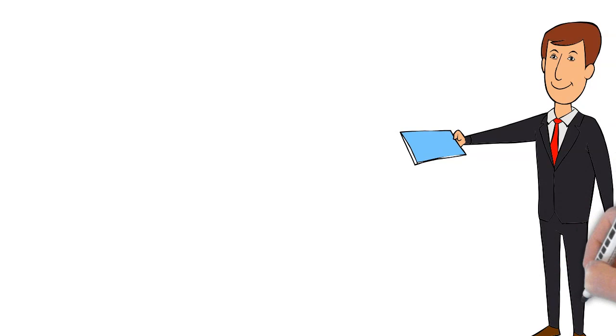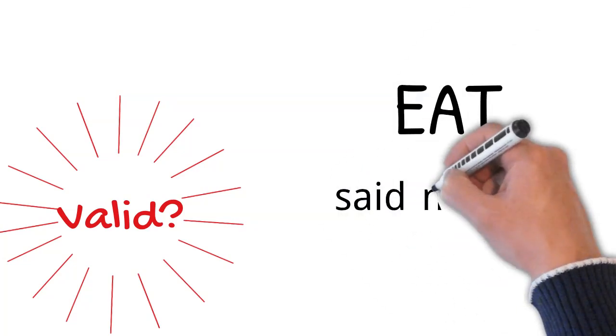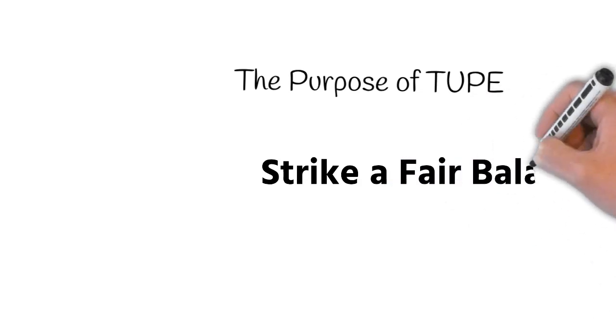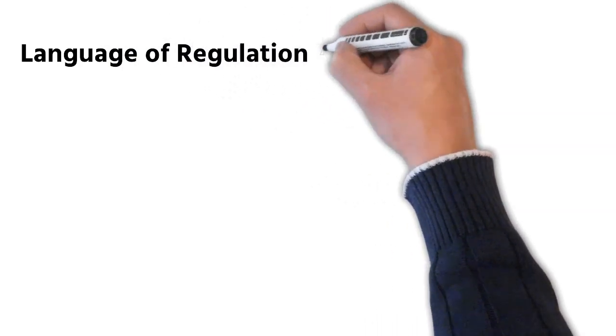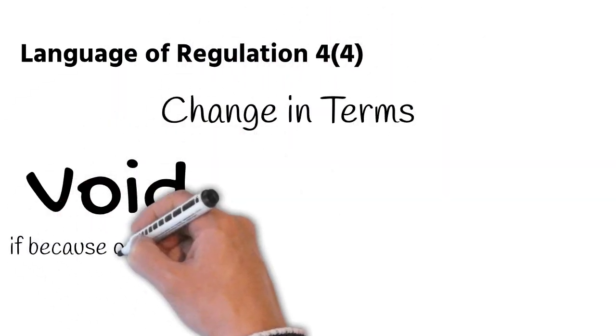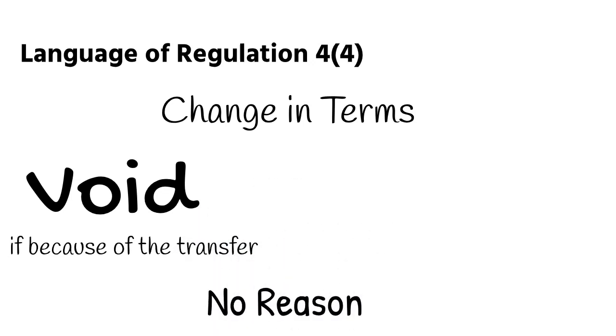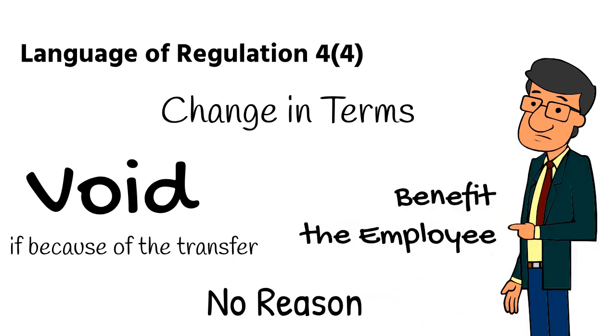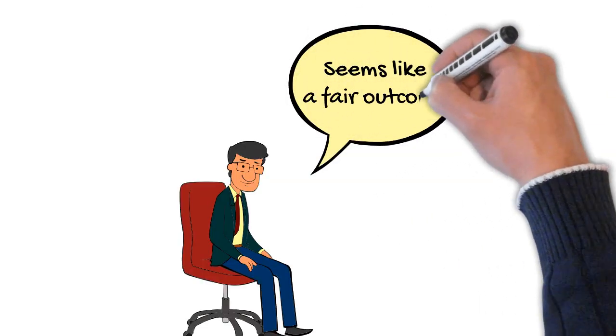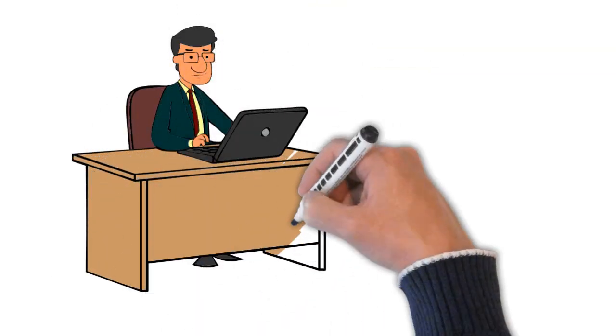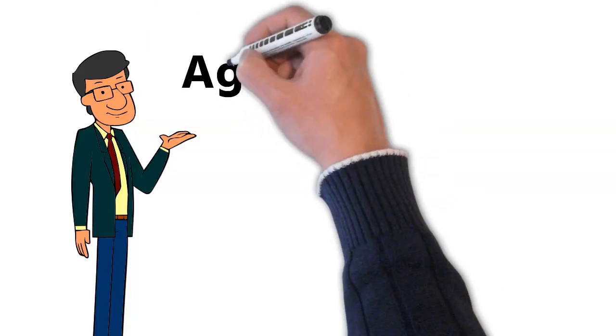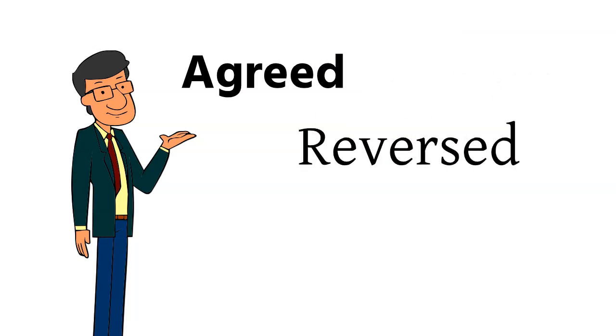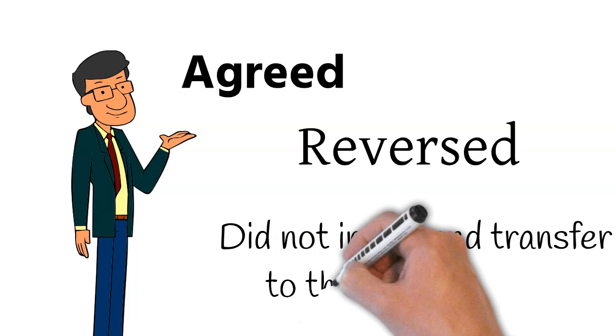One of the issues that subsequently reached the Employment Appeal Tribunal was whether these contractual improvements were valid and the EAT held they weren't. The EAT said the purpose of TUPE was to strike a fair balance between the rights of employer and employee. The language of Regulation 4.4 made it clear that any change in terms would be void if they were because of the transfer and there was no reason to exclude terms, said the EAT, that happened to benefit the employee. Now, on the facts of this case, this seems like a fair outcome. The employees appear to have been trying to use TUPE to exploit their new employer by introducing changes that had no commercial justification. It was also telling that they'd agreed the changes would be reversed for any employee who didn't, in the end, transfer to the new employer.